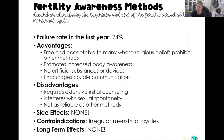The unfortunate problem with fertility awareness methods is they do have a failure rate in the first year of 24%, which makes them some of the least reliable methods in that first year. Most of that failure rate is related to the fact that these methods require a lot of education — the woman and the partner really understanding how the method works and communicating exceptionally well, then cooperating together to use this form of contraception.